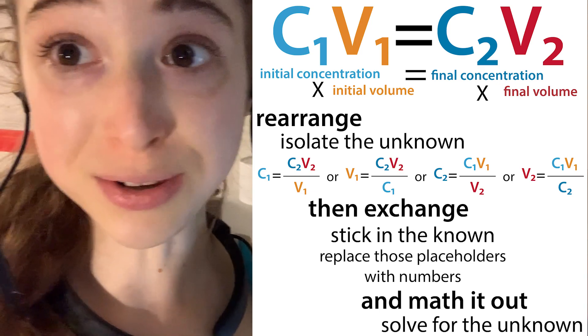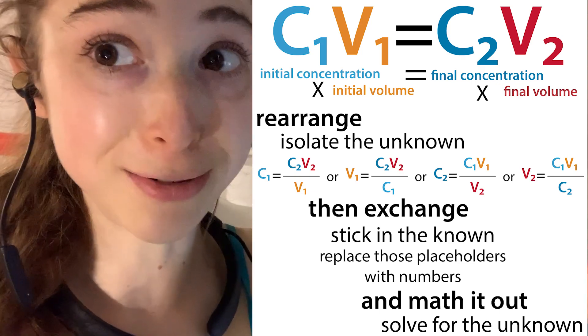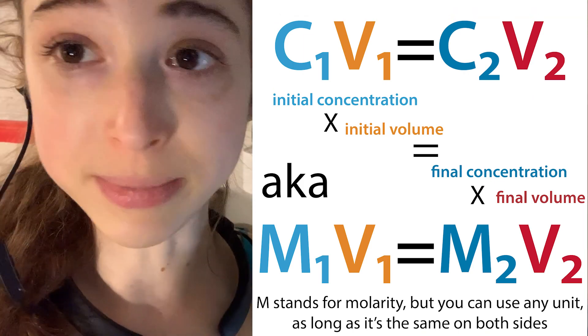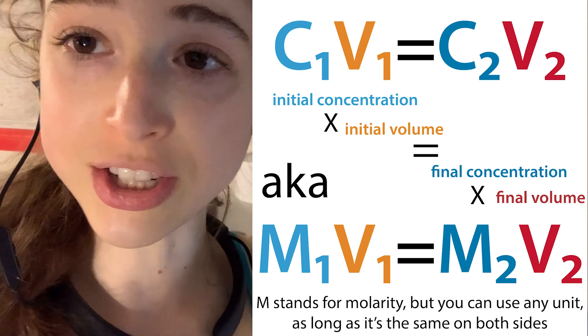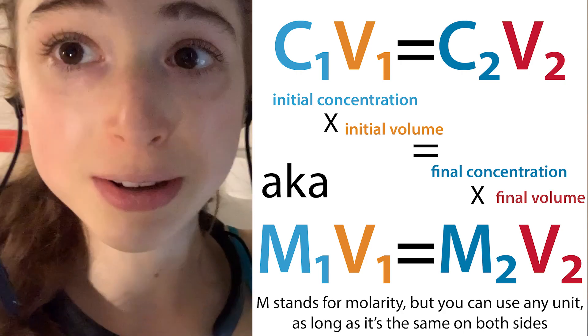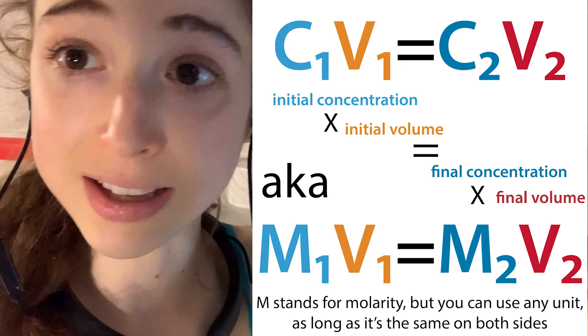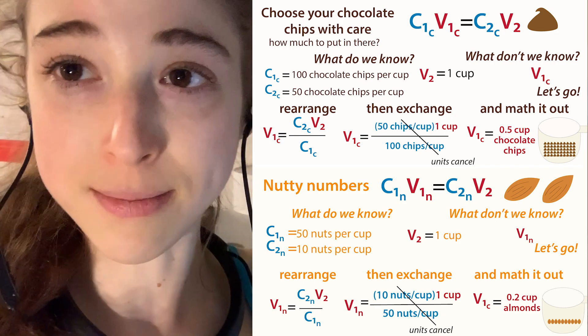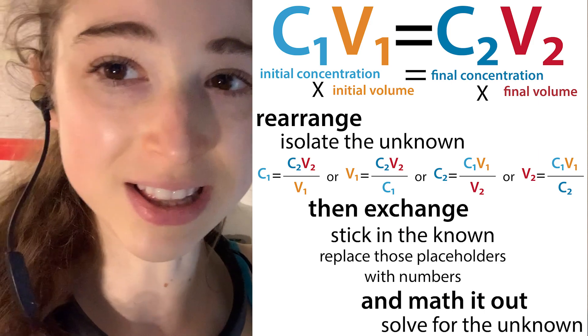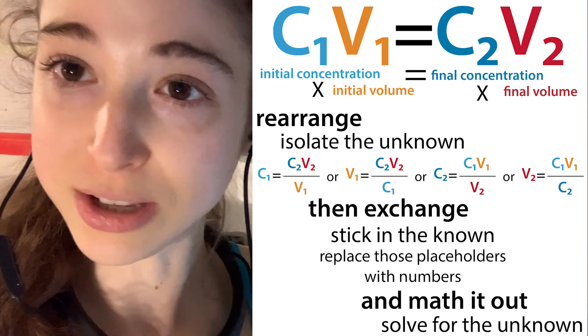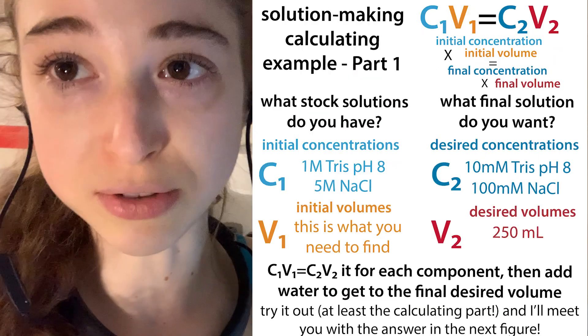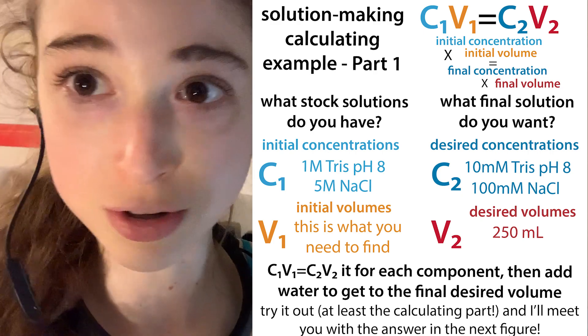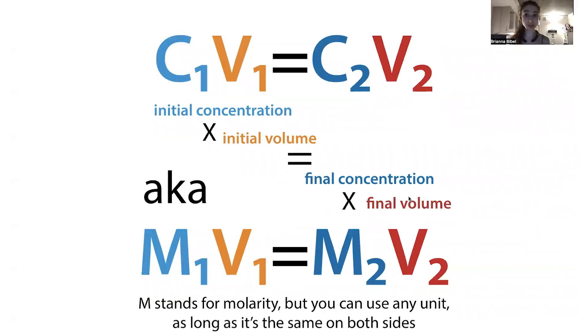C1V1 equals C2V2 is one of the most helpful things I can share with you. You might have heard it as M1V1 equals M2V2, because often the C for concentration is given in terms of molarity, but it can really be in terms of anything, including chocolate chips per cup. C1V1 equals C2V2 - super helpful formula, super simple, but so, so helpful.